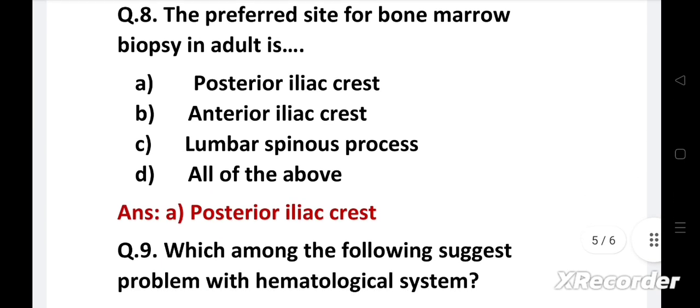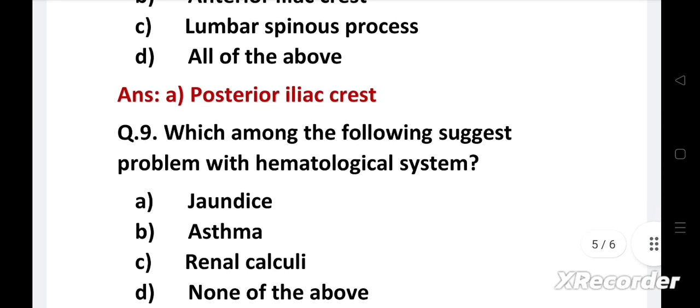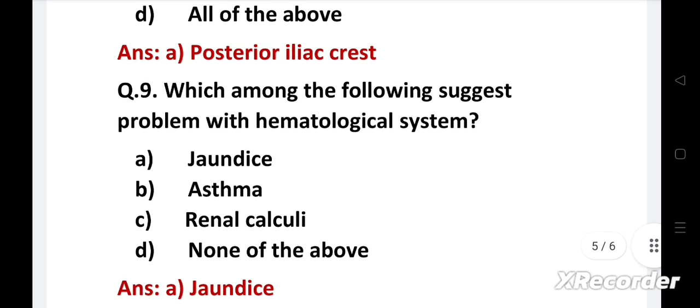Next question: Which among the following suggests problem with hematological system? Option A - Jaundice, B - Asthma, C - Renal calculi, D - None of the above. Right answer is Option A - Jaundice. If there is any problem with hematological system, increased RBC breakdown can occur and pigment will be released into bloodstream and it can lead to jaundice. Asthma and renal calculi are unrelated to hematological system.